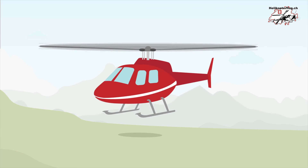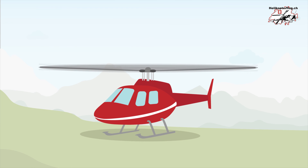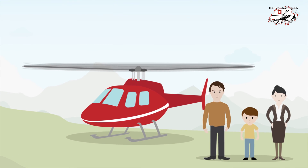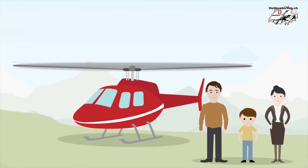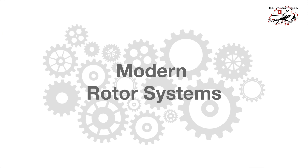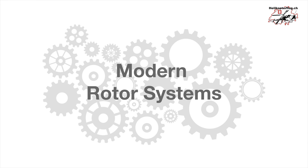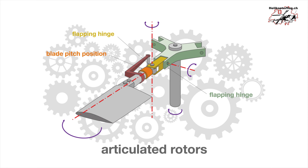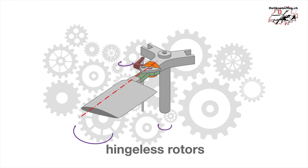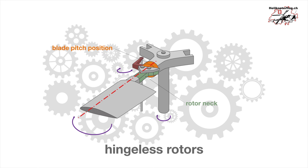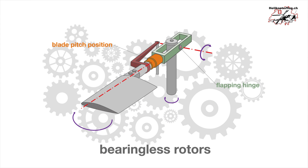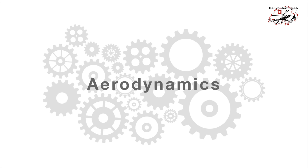Here's how you fly a helicopter. Before you sit in the pilot's seat, we want to show you how helicopters work and how they fly. We'll start with the main rotor. We can divide modern rotor systems into the following categories: articulated rotor systems, hingeless rotor systems, and bearingless or semi-rigid rotor systems.